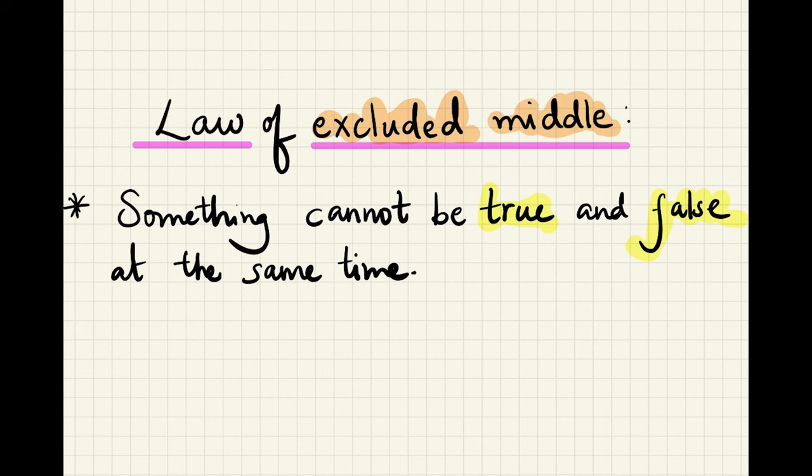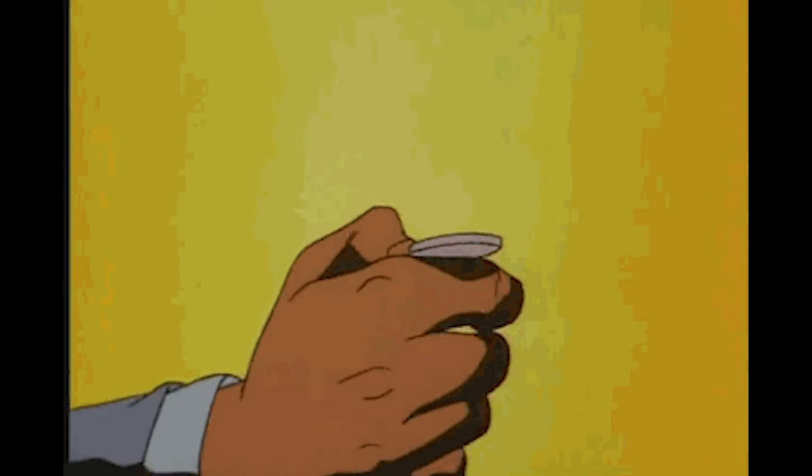The law of excluded middle states that something cannot be true or false at the same time. It has to be either true or false. For example, a coin toss will result in either heads or tails. It cannot result in both, nor can it result in neither.